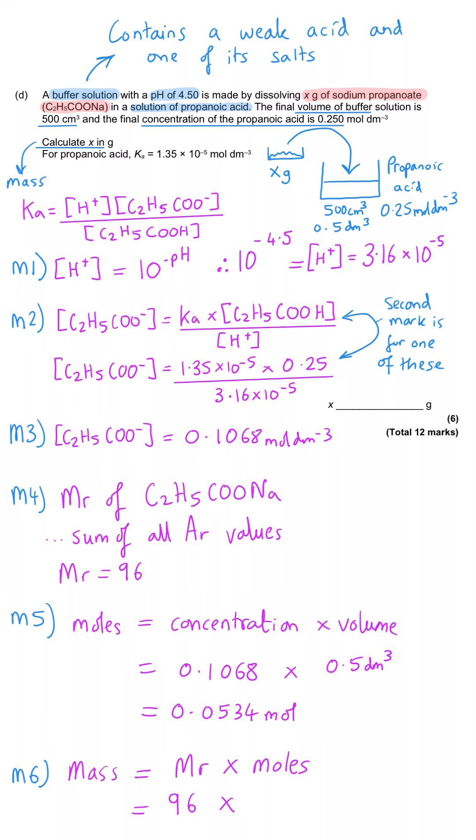which gets us a moles of 0.0534 for the sodium propanoate. And now that since the MR is 96 grams per mole, the mass of sodium propanoate, that's our final mark, is going to be 0.0534 moles multiplied by 96, which gets us 5.13 grams. And so this is the mass of sodium propanoate that needed to be put into the propanoic acid to get us a buffer solution with a pH of 4.50.